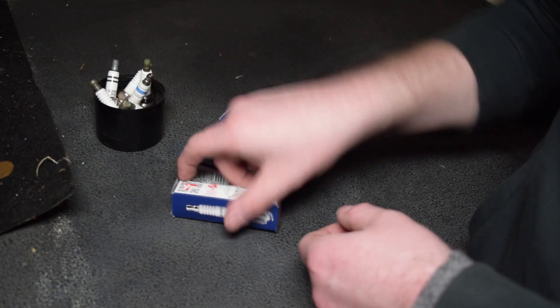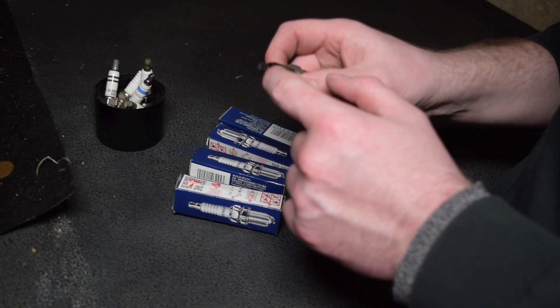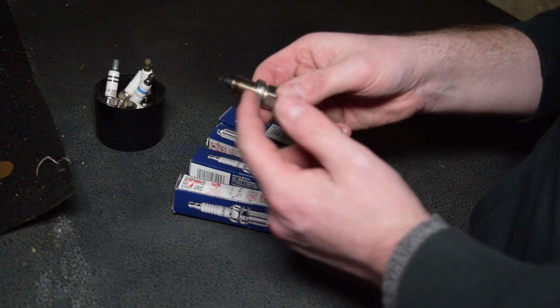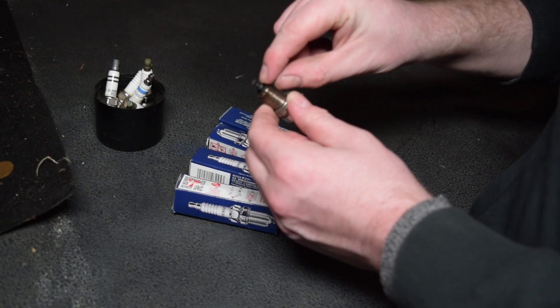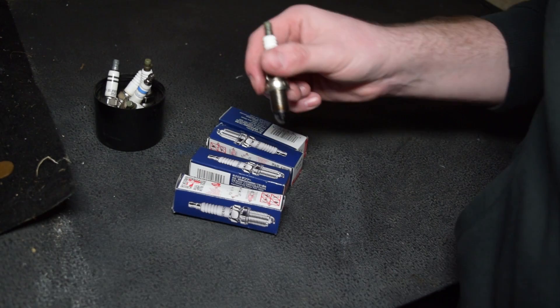Spark plugs basically are an electrode and then an earthing point which is at the bottom. A spark goes down the coil pack, follows the pack, follows the actual spark plug itself. A spark jumps from the electrode to the earth point, then igniting the air fuel mixture inside the car's engine.